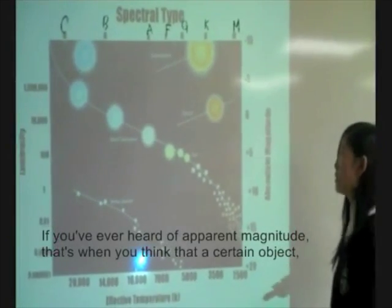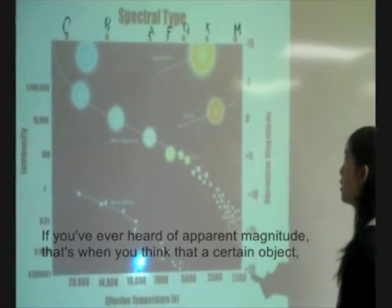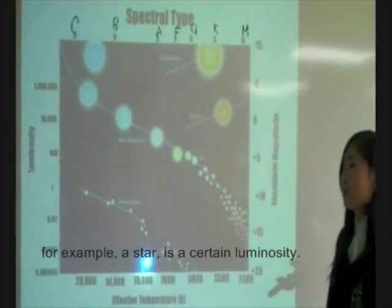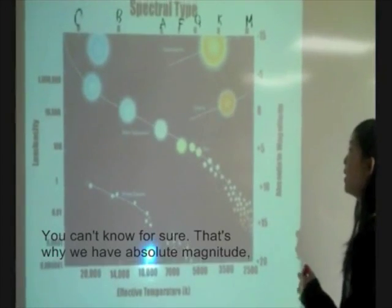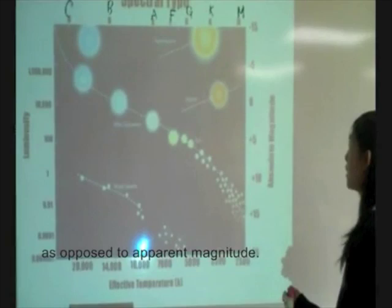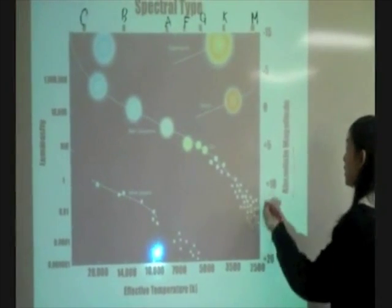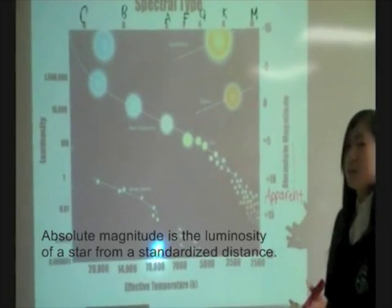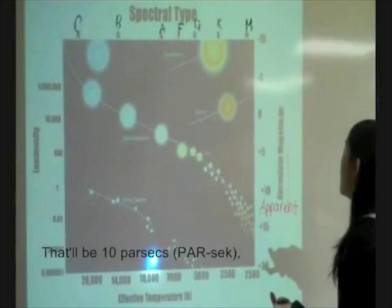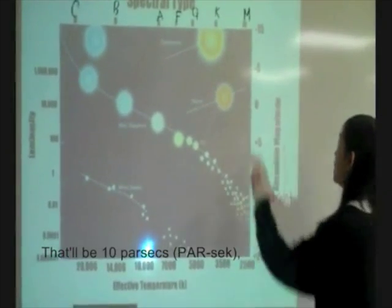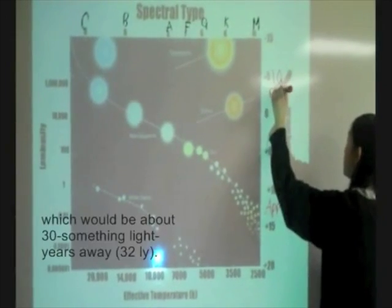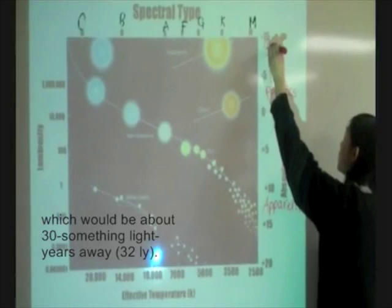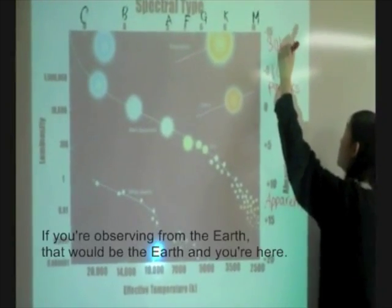So you may wonder what absolute magnitude is. If you've ever heard of apparent magnitude, that's when you think that a certain object, for example a star, is a certain luminosity, but you can't know for sure. So that's why we have absolute magnitude as opposed to apparent magnitude. Absolute magnitude is luminosity of a star from a standardized distance. So that would be 10 parsecs, which would be about 30 something light years away.